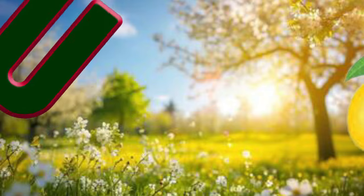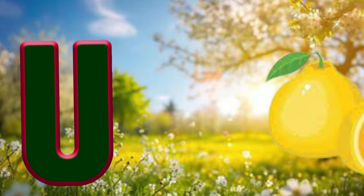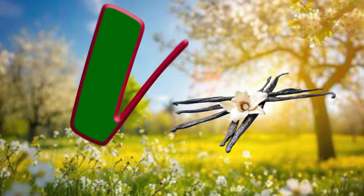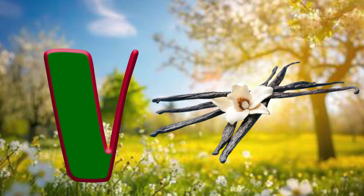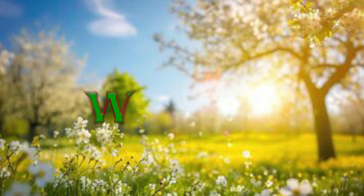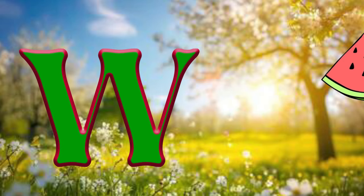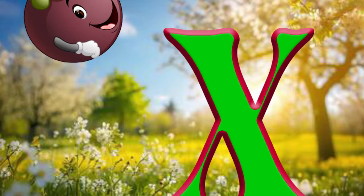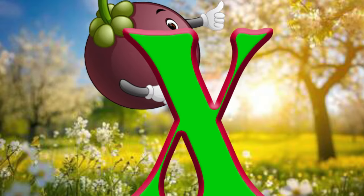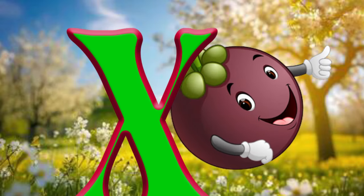U is for Ugly Fruit. U. Ugly Fruit. V is for Vanilla Beans. V. Vanilla Beans. W is for Watermelon. W. Watermelon. X is for Xangomangostine. X. Xangomangostine.